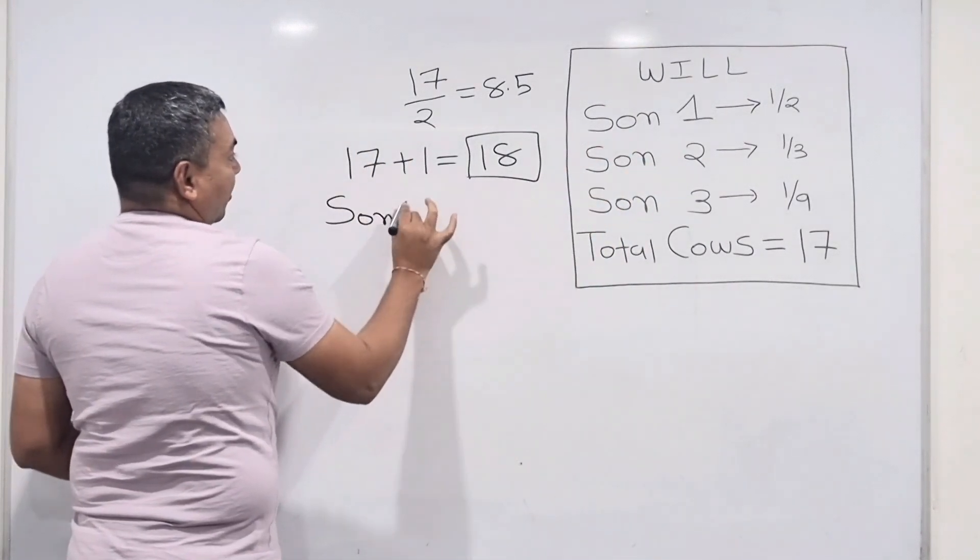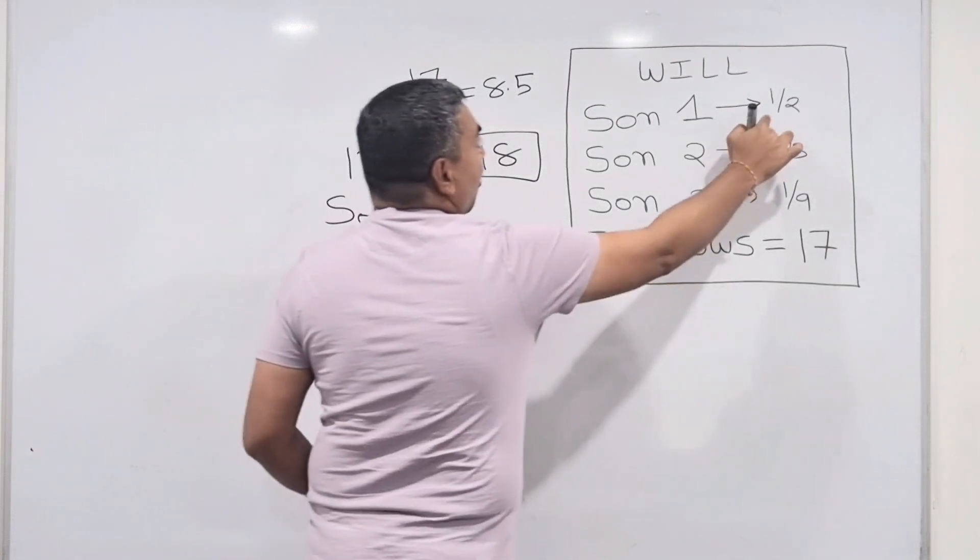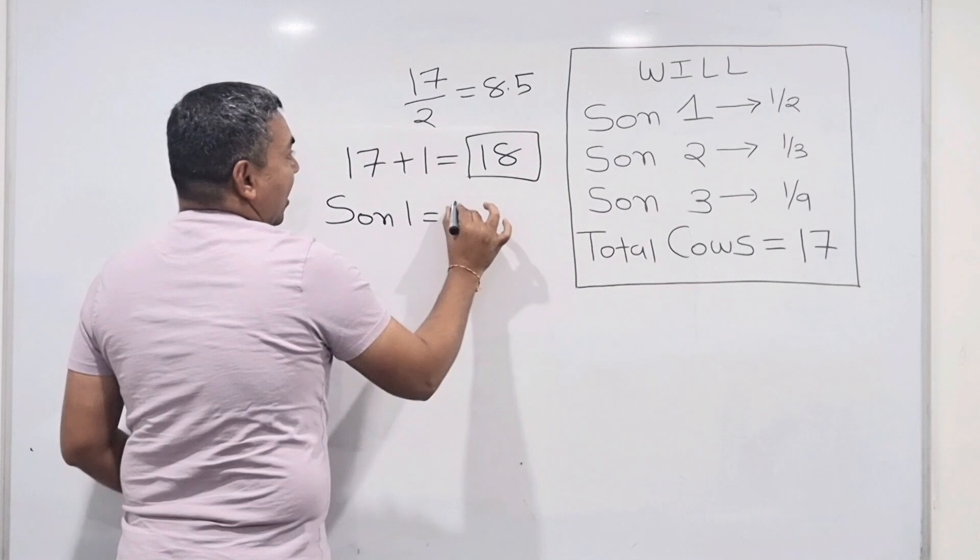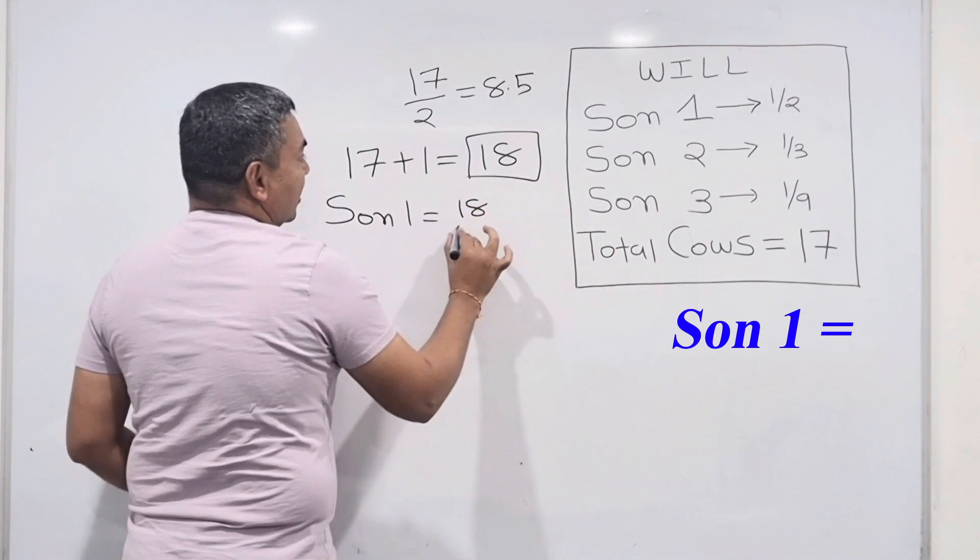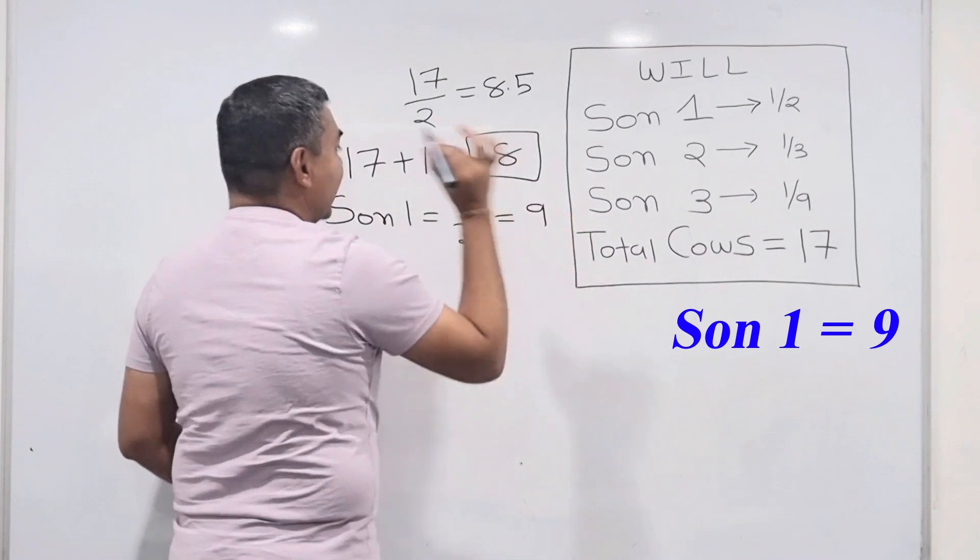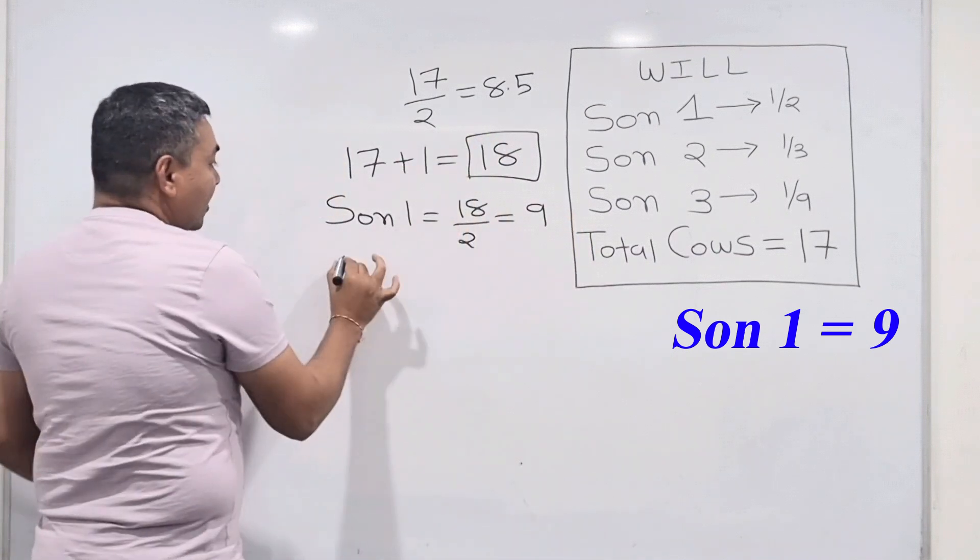Son number one, what should he be getting? One half of this 18. So one half of 18, which is 18 divided by 2, so son number one will be getting 9 cows. Son number two, he'll be getting one third, which is 18 divided by 3, so he'll be getting 6 cows.